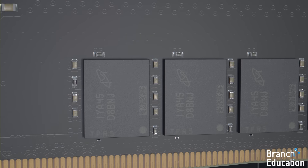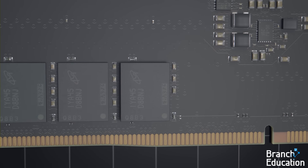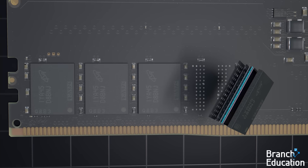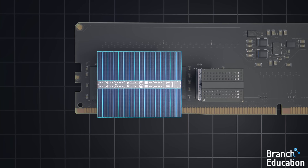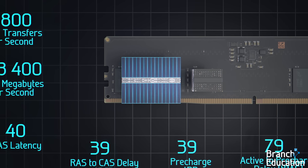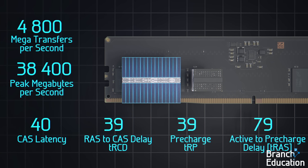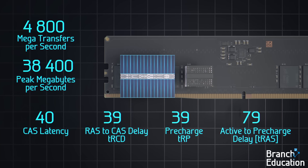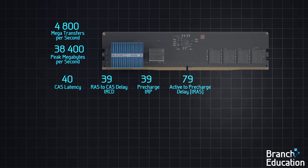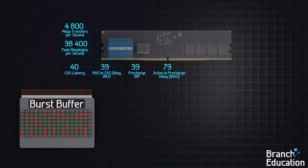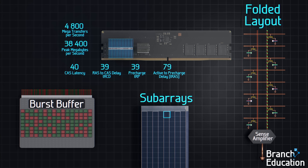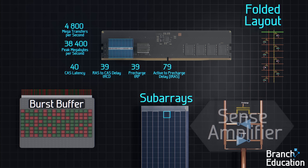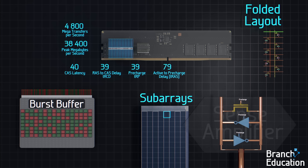The first complex topic which we'll explore is why there are 32 banks, as well as what the parameters on the packaging of DRAM are. After that, we'll explore burst buffers, subarrays, and folded DRAM architecture and what's inside the sense amplifier.